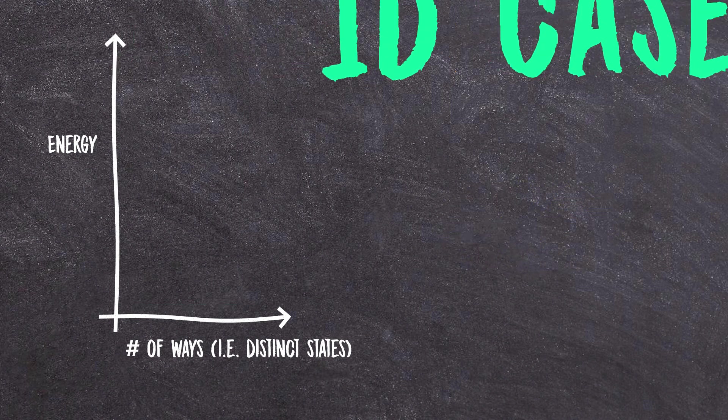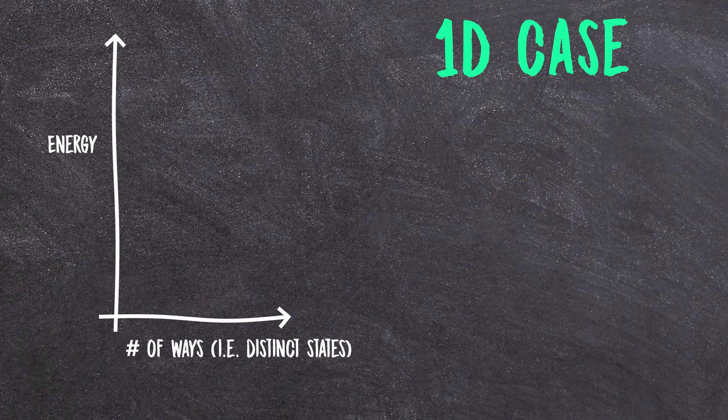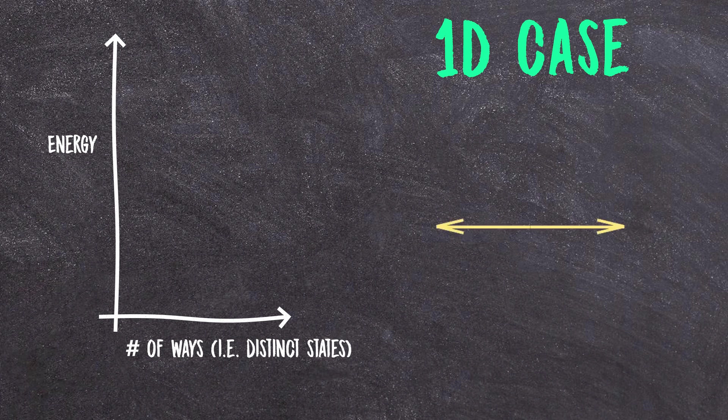And finally, what if we lived in a one-dimensional universe? Well, then there's actually just two distinct states that have the same speed, to the left or to the right. That's it. And in that case, you end up with this graph.